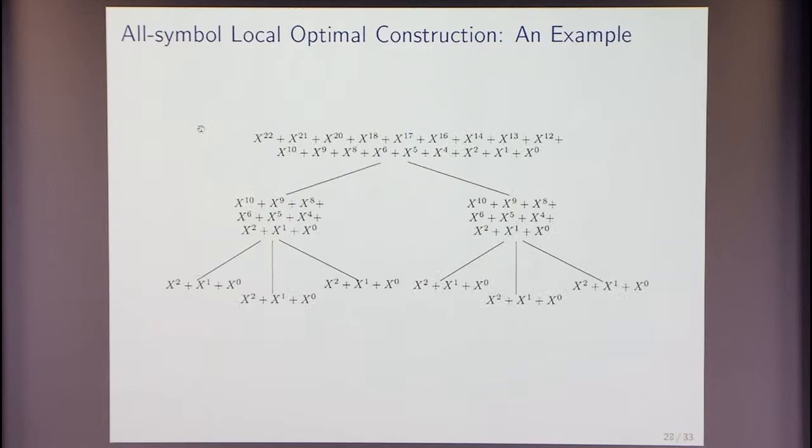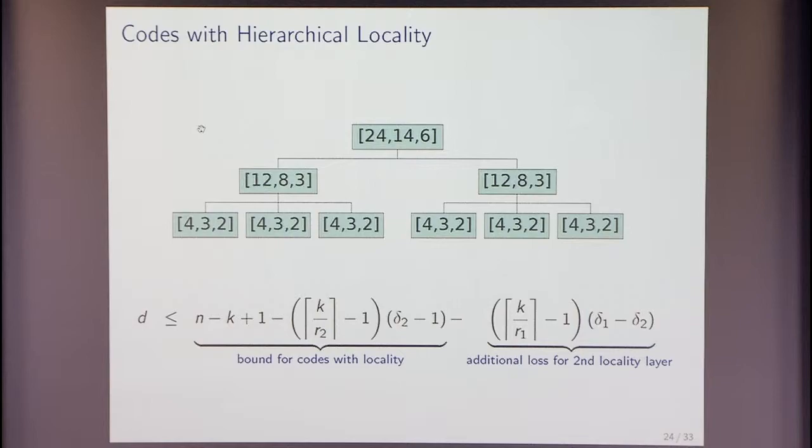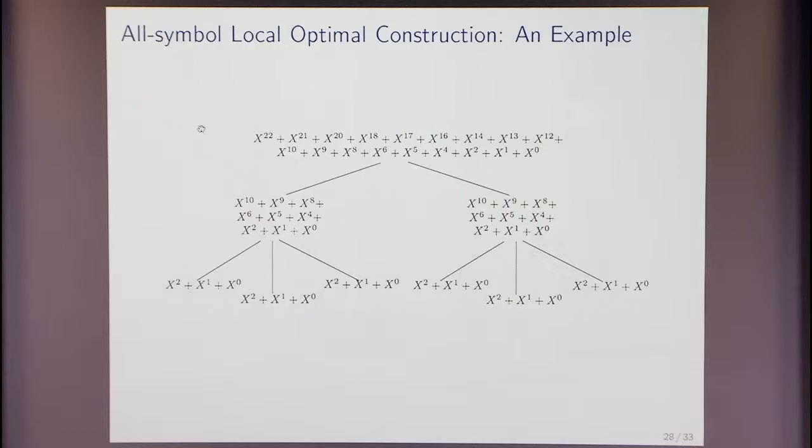And now, what this decomposition means is that the elements of this identify the support of the local codes. So, the local codes have as their support these elements. Alright. So, so far, so good. Now, how about the code? So, the code, okay, here's another way of looking at the Tamo Barg construction. Now, you want to construct a code which is 432. That means it has block length 4. You want dimension 3 and you want minimum distance 2. So, if you restrict your code so that it looks like a polynomial, right, of degree 2, right, then by adjusting these coefficients, you can get dimension 3. And since it cannot have more than two zeros, you have minimum distance 2. So, these, so if you construct your code in such a way that when the code polynomial is restricted to this support of length 4, it looks like this, then you have a local code. And you want that same local code in all of your six local codes.